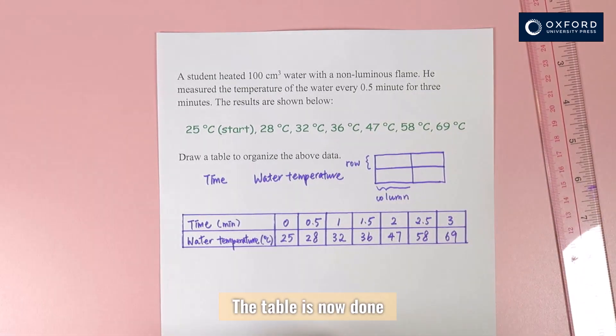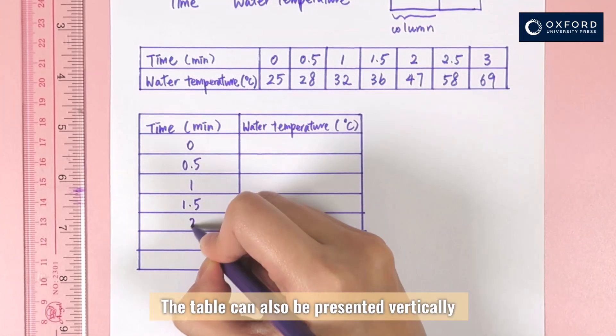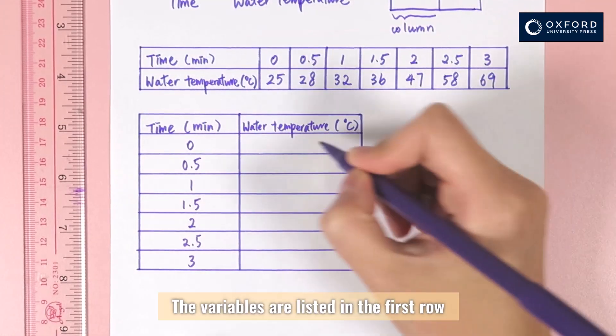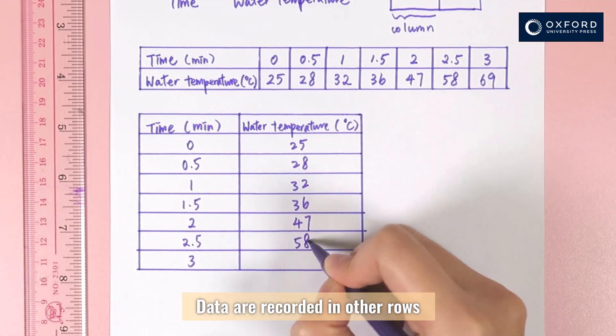The table is now done. The table can also be presented vertically. The variables are listed in the first row. Data are recorded in other rows.